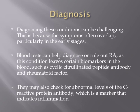Diagnosis can be challenging because symptoms often overlap, particularly in early stages. Blood tests can help diagnose rheumatoid arthritis; this condition leaves certain biomarkers in the blood, such as the cyclic citrullinated peptide (CCP) antibody and rheumatoid factor. The CCP antibody is now considered more specific than rheumatoid factor alone. Abnormal levels of C-reactive protein, a marker of inflammation, are also checked and are important in autoimmune disease diagnosis.